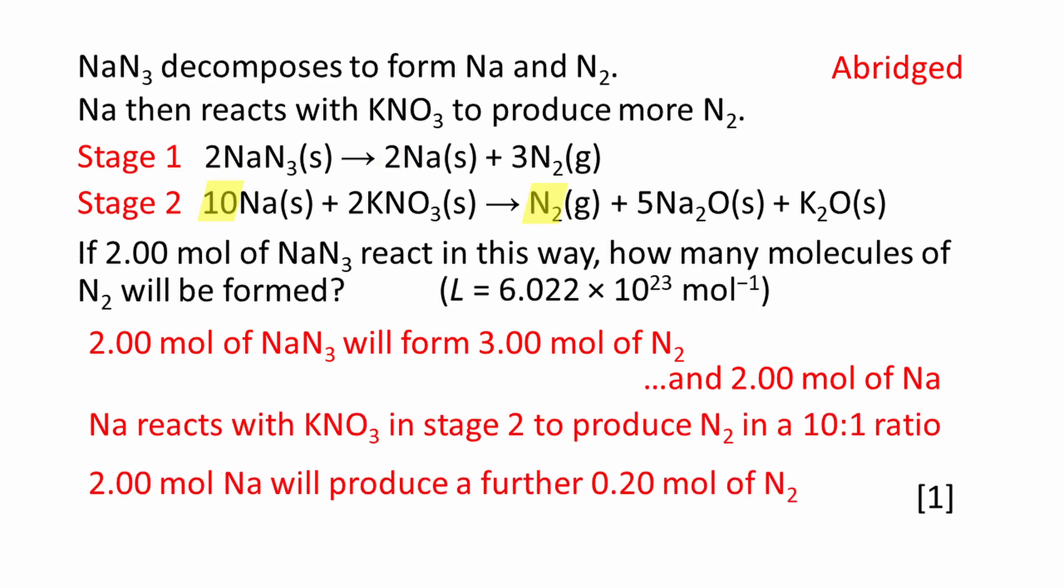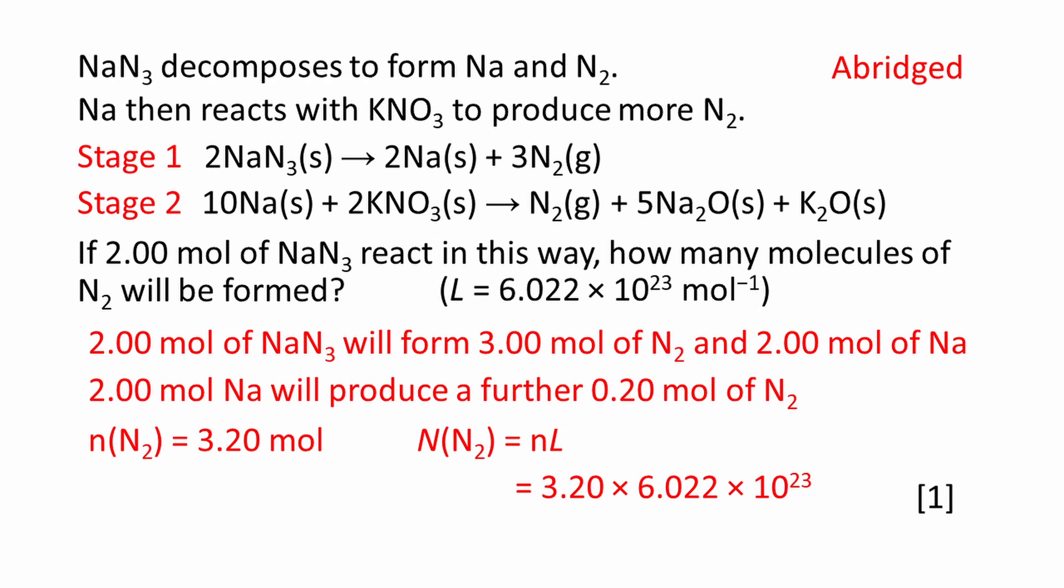Na reacts with KNO3 in stage two to produce N2 in a 10 to 1 ratio. 2.00 mole of Na will produce a further 0.20 mole of N2. The total amount of N2 produced by 2.00 moles of NaN3 in this two-stage process is 3.20 moles.